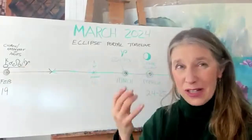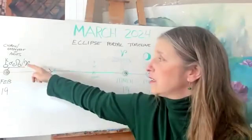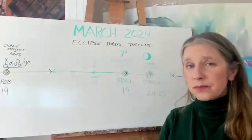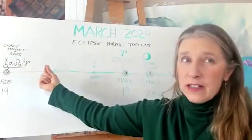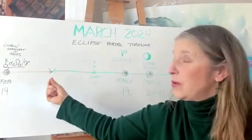It's known as the wounded healer and it's conjunct the north node in the sign of Aries. I'm just explaining a little bit why this Chiron and north node conjunction in Aries is so important.